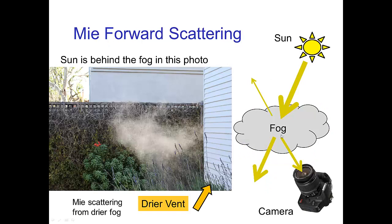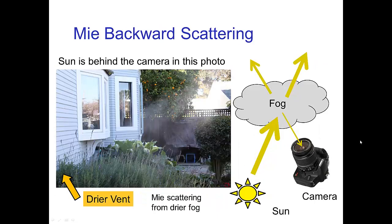Here's an example photographed in my backyard. You see some fog coming out of a clothes dryer — the photograph is taken with the fog between the sun and the camera, so we see the fog because we're seeing the forward scattering of sunlight towards the camera. Walking around to the other side, the fog is much less visible because now the sun is behind the camera, so the light we see scattered from the fog is backward scattering — and with Mie scattering, backward scattering is much weaker.